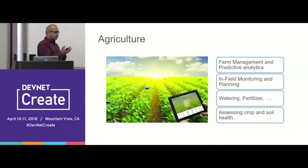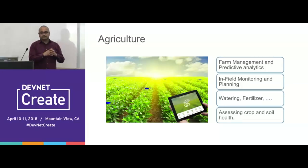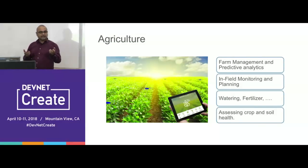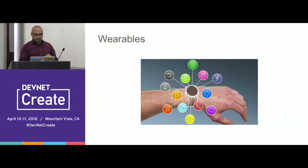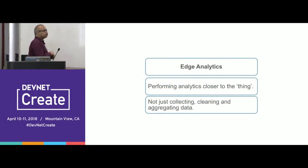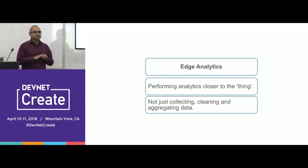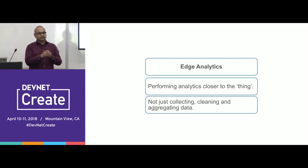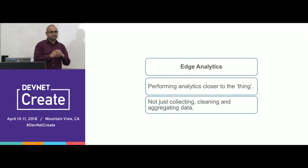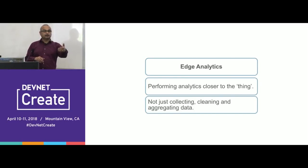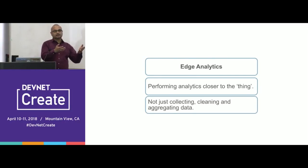Agriculture is a great example of edge computing — we generate a lot of data from the field, do analysis based on that data, and need edge computing there. We used to think edge computing was just about collecting data, cleaning it, aggregating it, and sending it to the cloud. But that's not the whole story anymore — agile analytics is the use case, for example in agriculture, where we need to process data and generate analysis so that we can react to those data right there.